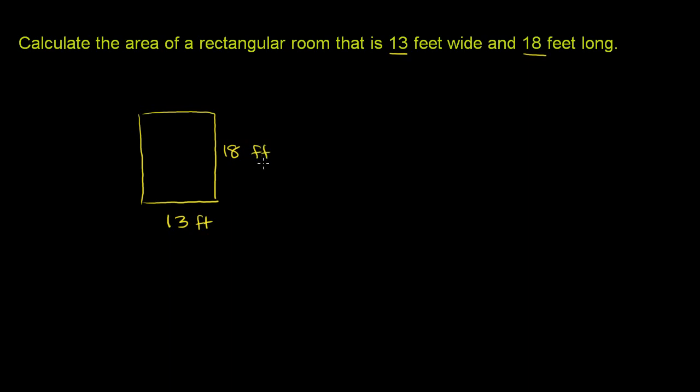When you're looking for the area of a rectangle, you literally just multiply the two dimensions—you multiply the width times the length. So the area is going to be equal to 13 times 18 square feet. Let's multiply that out: 13 times 18.